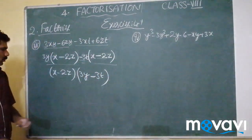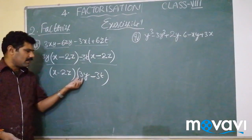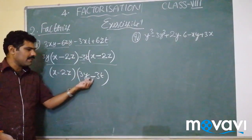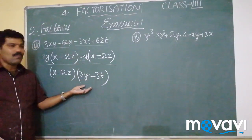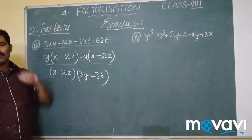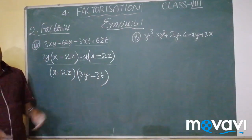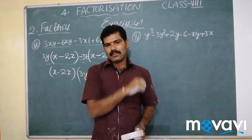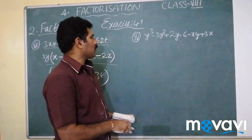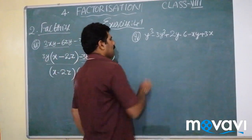So X minus 2Z and 3Y minus 3T are the factors of this problem. This is what factorization is. Now let us solve the fourth problem of the second method.